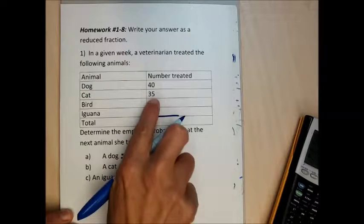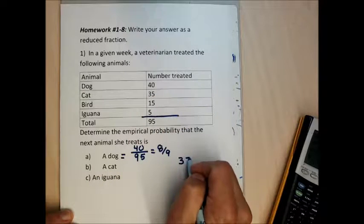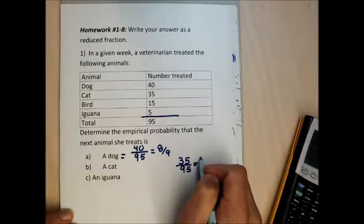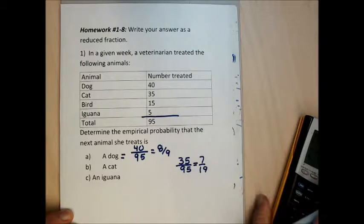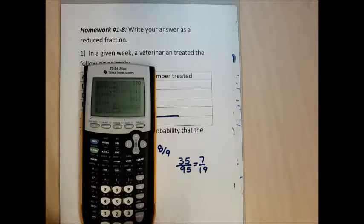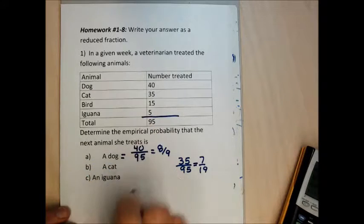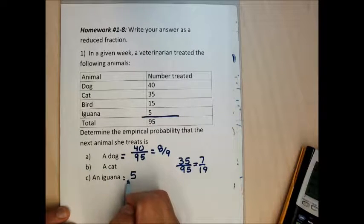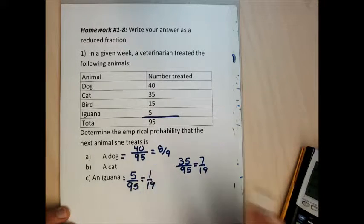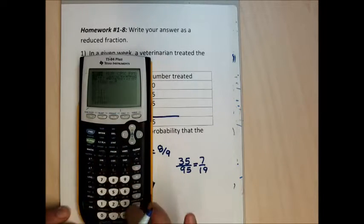For part B, the probability the next animal is a cat: 35 cats divided by 95 total animals. I'll check on my calculator — 35 over 95 reduces to 7 over 19. Lastly, the empirical probability she treats an iguana: 5 iguanas over 95 total animals. That reduces to 1 over 19.